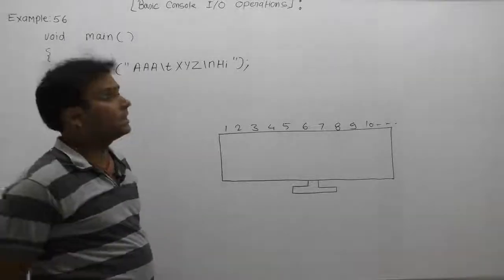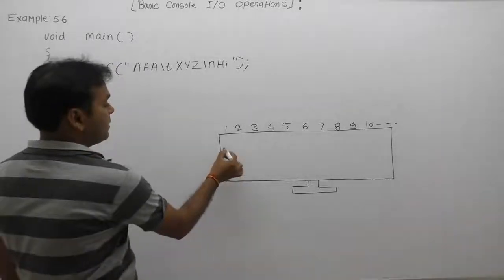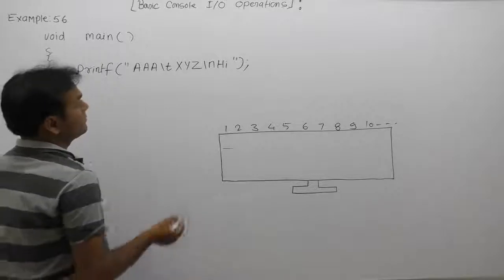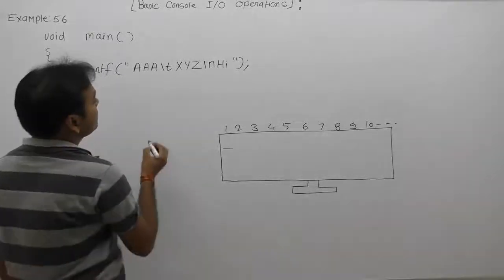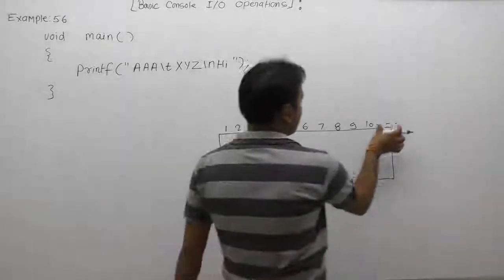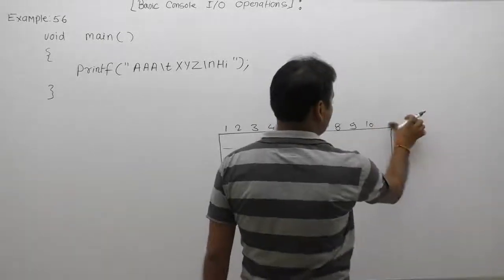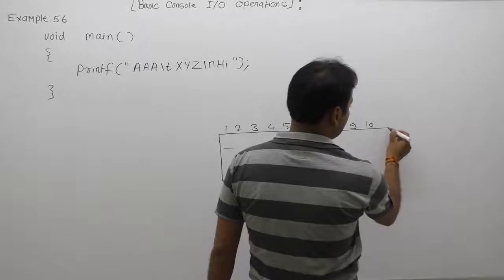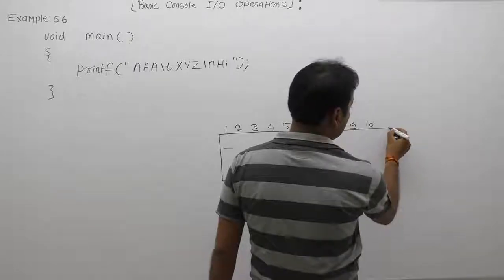Again, next example: the cursor will be available at the first position here. We are using \t, therefore we require more positions for displaying the given message, so we are extending this diagram.